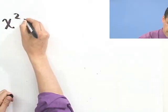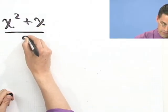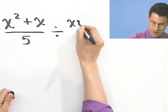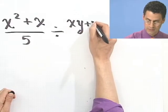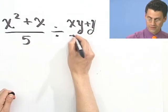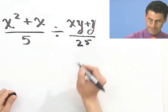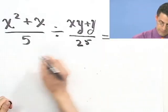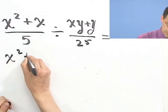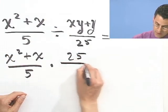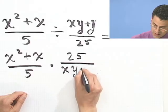x squared plus x all over 5. And we're going to divide that by xy plus y. Ooh, ooh, ooh, want to sneak it in so you can see it. Whoop! All over 25. OK, so what do I do? Well, I invert and multiply. So, this is going to equal x squared plus x over 5 times, and now I invert. So, I have 25 over xy plus y.